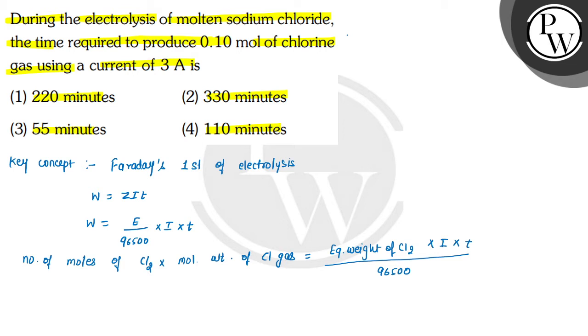So here we can write the reactions firstly. Which is molten sodium chloride, how is electrolysis, this reaction can be written as at cathode, firstly at cathode.